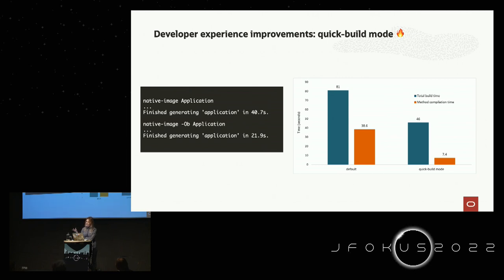The GraalVM compiler is itself written in Java, and when you get GraalVM builds you're getting a version of the Graal compiler compiled with native image. Measuring build time for lib-graal — the native image-compiled version of our compiler — method compilation time got significantly faster, around four times faster, contributing roughly 40% improvement to the overall image build time. We plan to improve runtime performance in this mode further and to speed up other stages of the image build process as well.